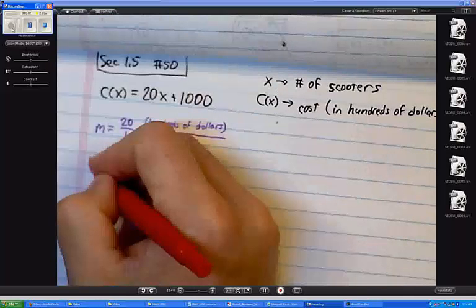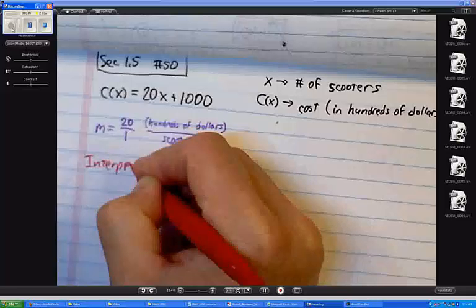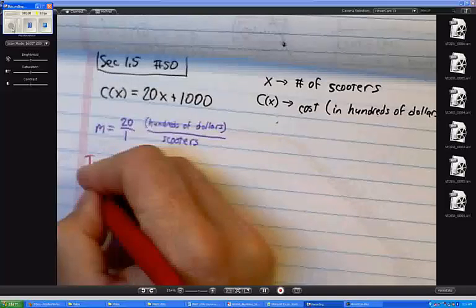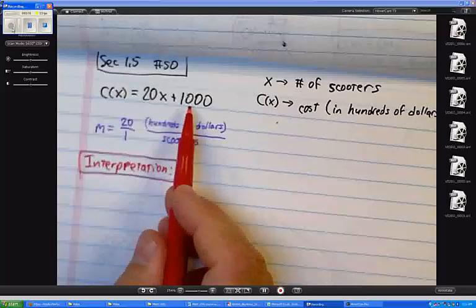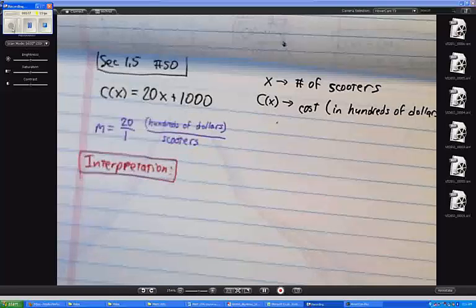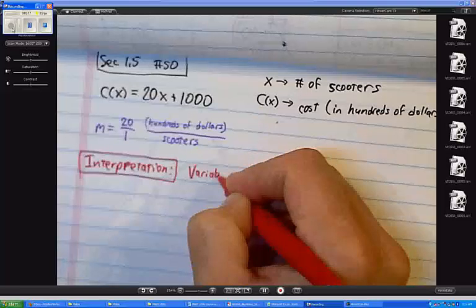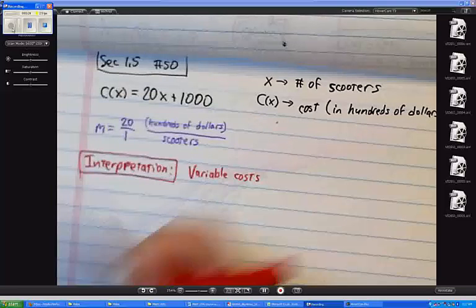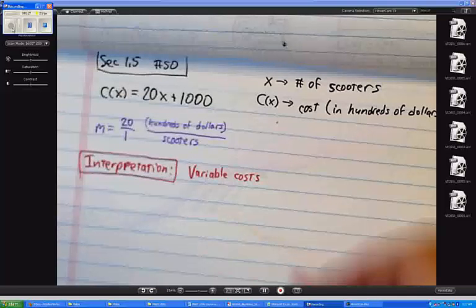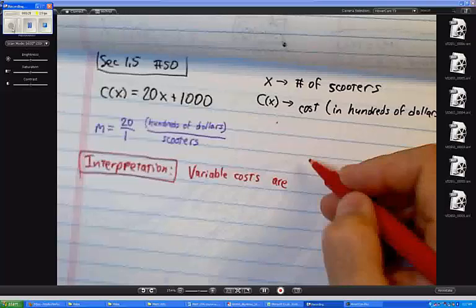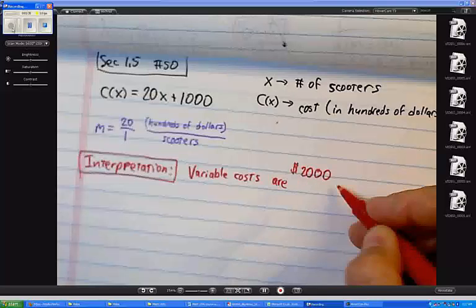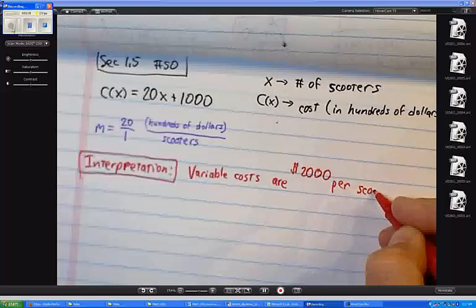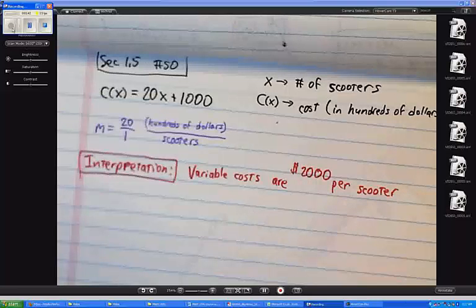So let me interpret it. Interpretation. And in a business setting, hey guys, remember how this Y-intercept, the thousand there, that $100,000 was my fixed costs? Well, we have something else in the business setting we call variable costs. And so the variable costs are, what would it be, $2,000, so what? $2,000 per what? Per one scooter. The variable costs are $2,000 per scooter. That's what this is saying.